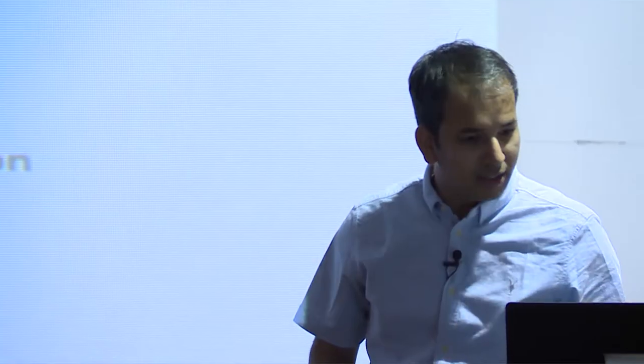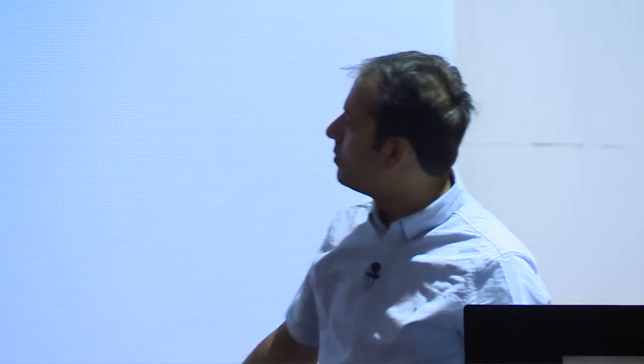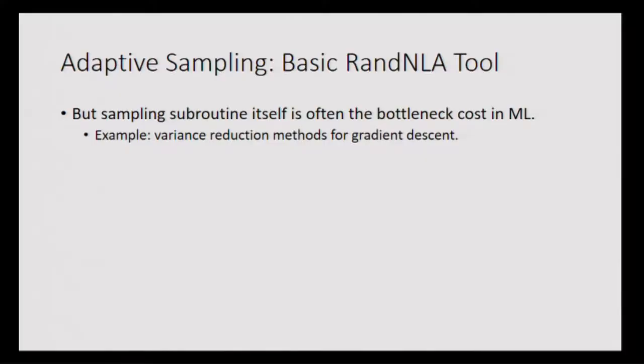Thank you for staying this long. This is joint work with a PhD student, an undergrad, and Rich. So we all know that adaptive sampling is a basic tool for reduction in many randomized numerical linear algebra tasks, but in many machine learning applications the cost of sampling itself is a bottleneck, and I will illustrate a few of those.